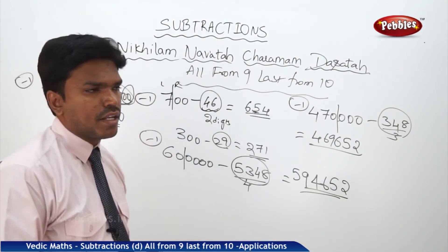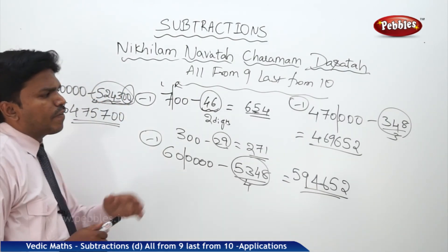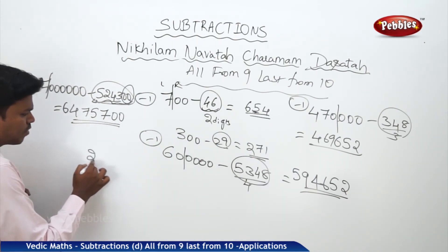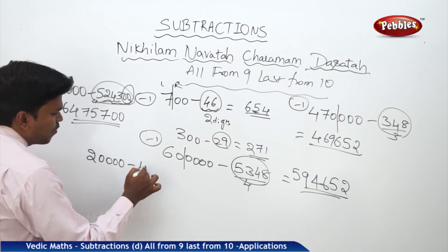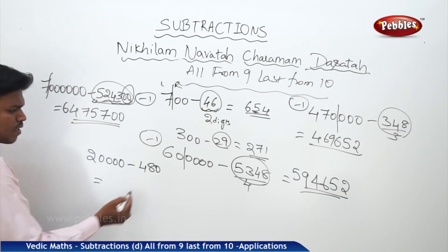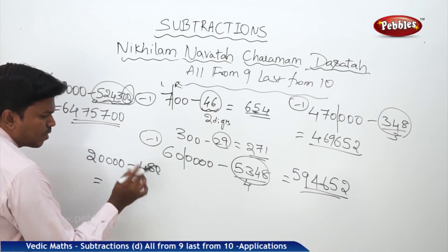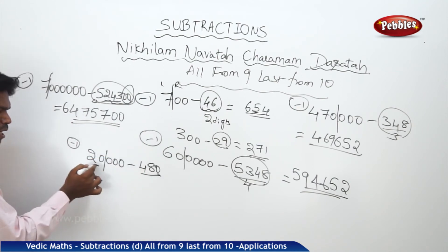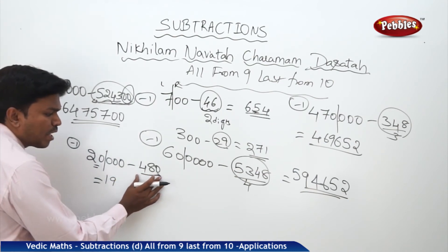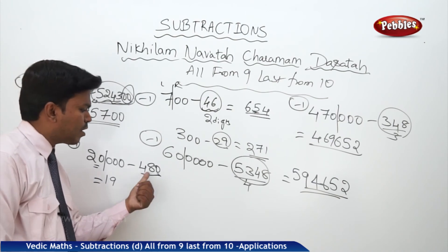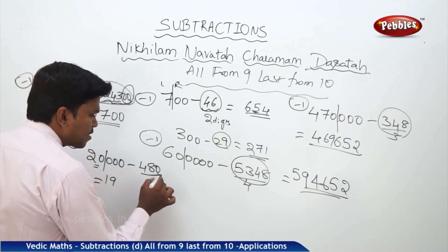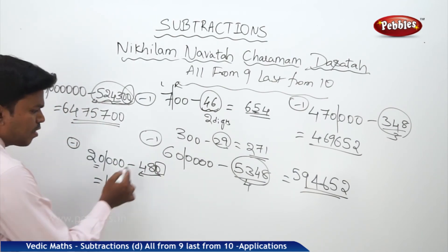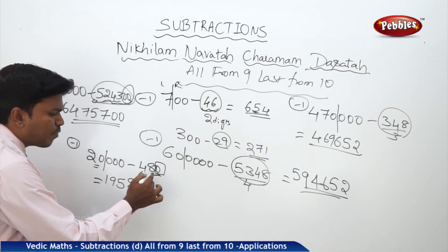Now, 20,000 minus 480. How many digits? Three — 1, 2, 3 — make a partition. The left part is 20, which becomes 19. To get the remaining part, apply 'all from 9, last from 10' to 480. Ignore the trailing zero for now — for 48: for 4 it is 5, for 8 it is 2 — then drop the 0 as it is. So the answer is 19,520.